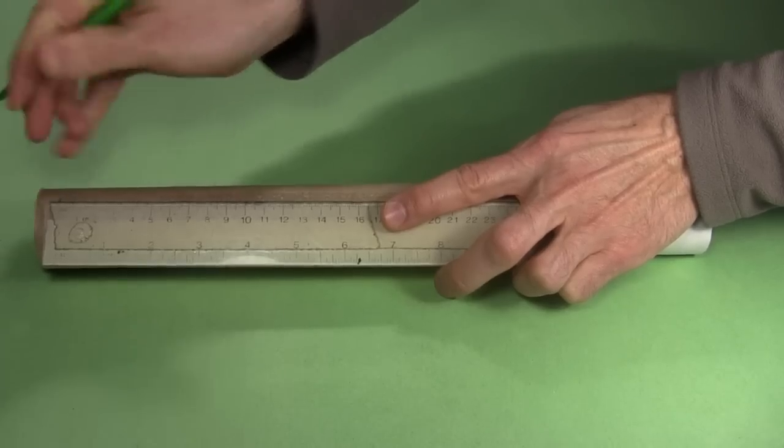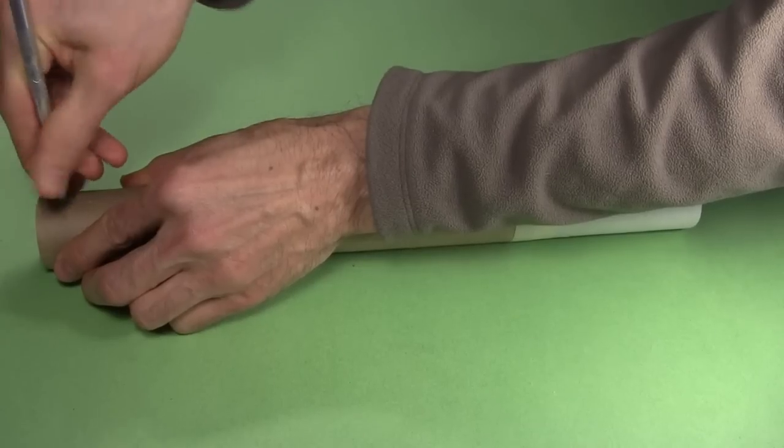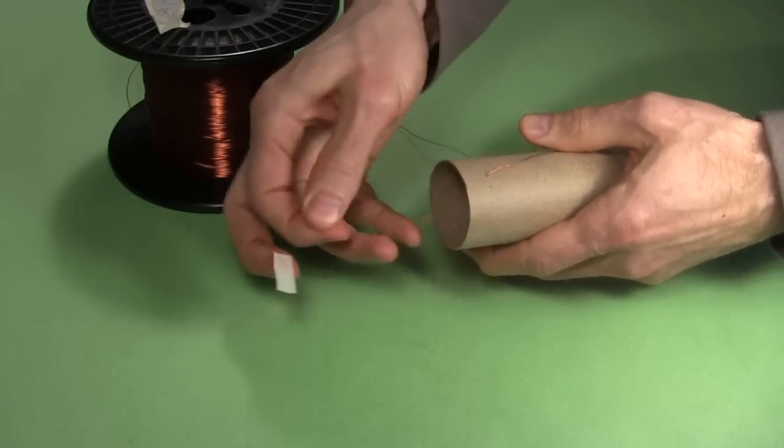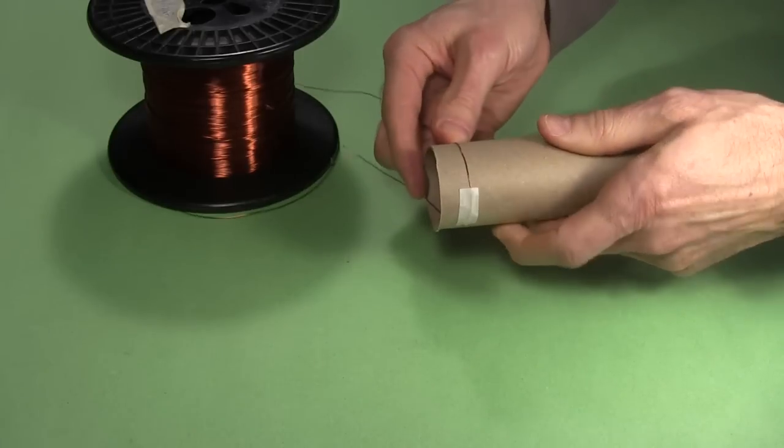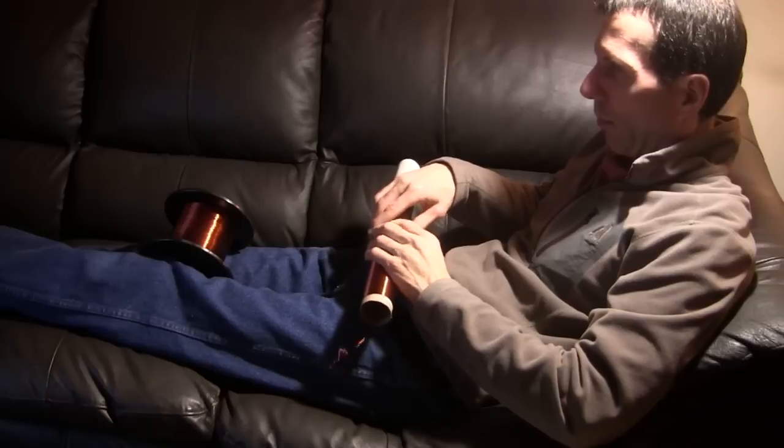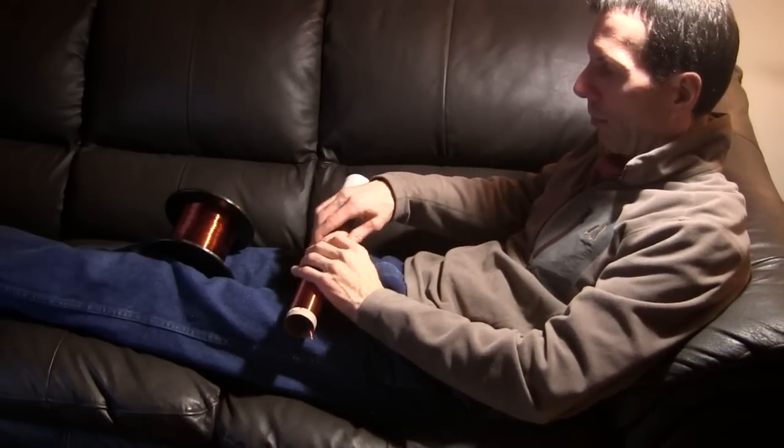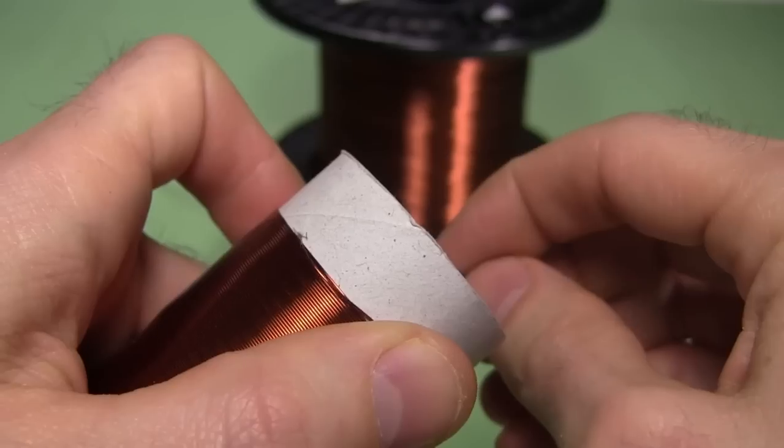Rather than count turns while winding it, I just mark the length on the tubes. I poke holes at either end, and push one end of the wire through one hole, securing it with tape. I start winding. There are faster ways of doing that that take some setup, but I can do it while watching a good science documentary, so I continue by hand. In the end it takes only around 2 hours.